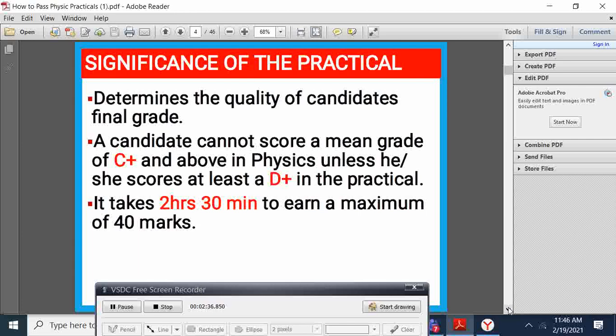The significance of the practical is that it determines the quality of the final grade. A candidate cannot score a main grade of C plus and above in physics unless you score a D plus in the practical. Therefore, it takes 2 hours and 30 minutes to earn a maximum of 40 marks.